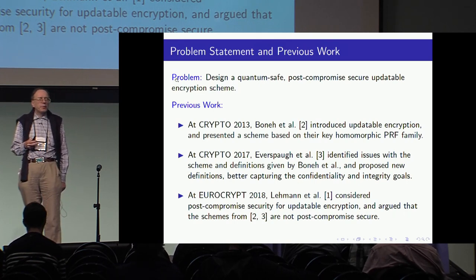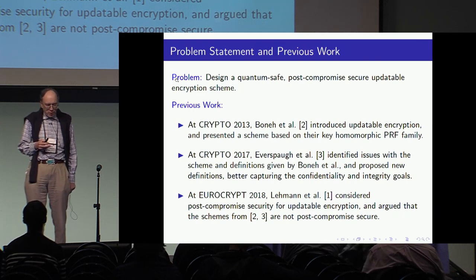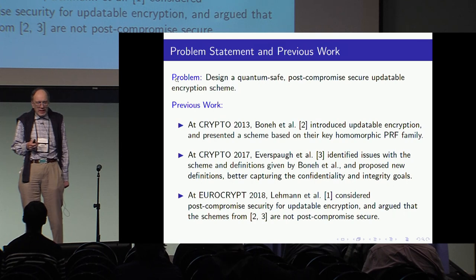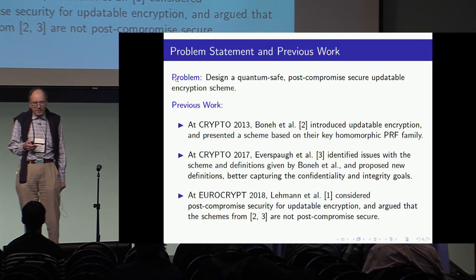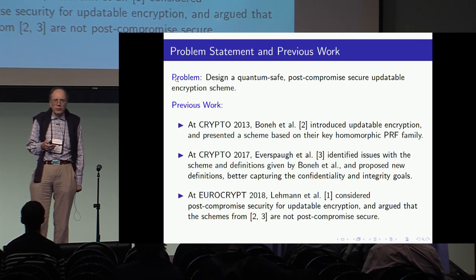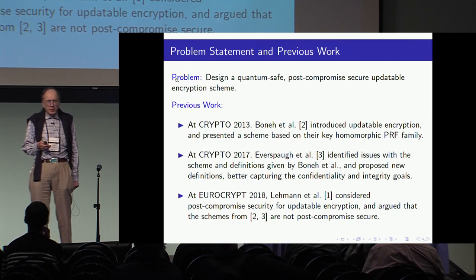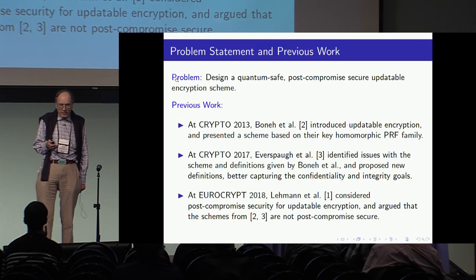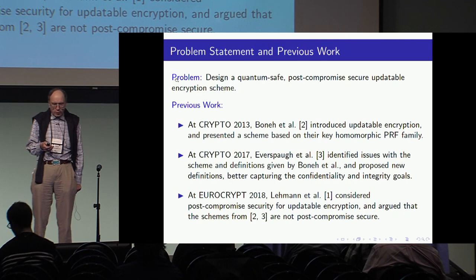A very important paper was proposed by Lehmann and co-authors at EuroCrypt 2018, which took place this year, that considered post-compromised security for updatable encryption, and argued that the schemes in the two previous works are not post-compromised secure.